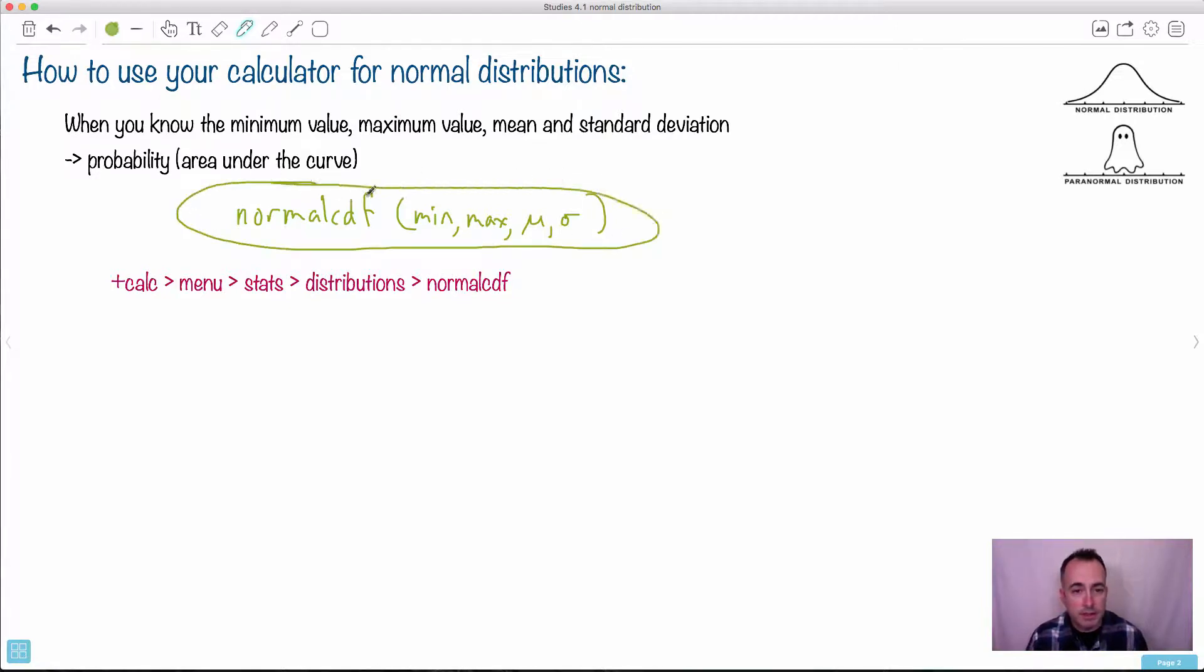So what that really does for you is that given some sort of data here, let's just say it's some data here. Let's just say this here is the mean right here. Let's just say you want to know like what's the probability of finding something from here to here, for example, this would be the min, this would be the max. So if you're told these, if you're told like this is the minimum value, this is the maximum, and you're told the mean and the standard deviation, you can use your calculator to tell you the area under this curve. In other words, the probability of finding this thing there.